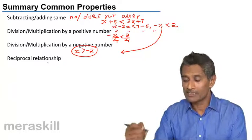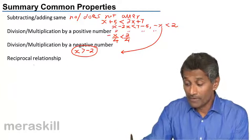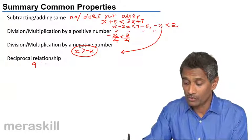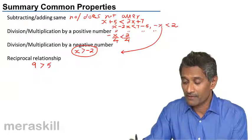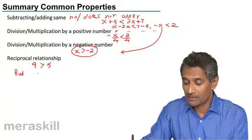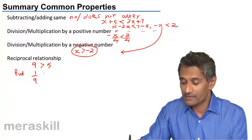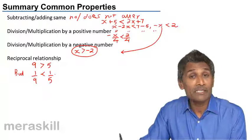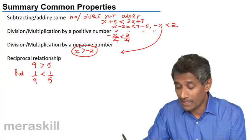And a recap of the reciprocal relationship: if you have a number say 9, we know 9 is greater than 5, but 1 by 9 is less than 1 by 5.